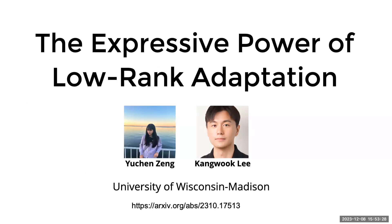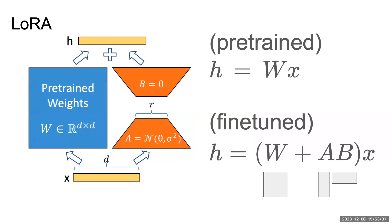This is joint work with my student Yuchen at Wisconsin, posted on arXiv two months ago. The formal definition of LoRA: for one particular linear layer with pre-trained weight matrix W, we fix W and only perturb it by a low-rank change delta-W. We explicitly factorize delta-W as the product of a tall matrix A and a short wide matrix B, ensuring the rank is bounded by R.